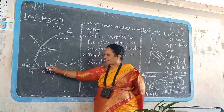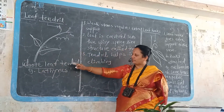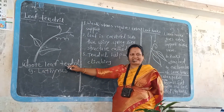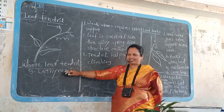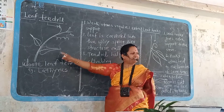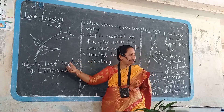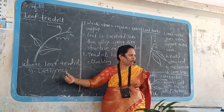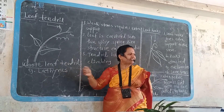That means this is a modification of leaves into tendrils. For example, in the Lathyrus plant, leaves are converted into tendrils.